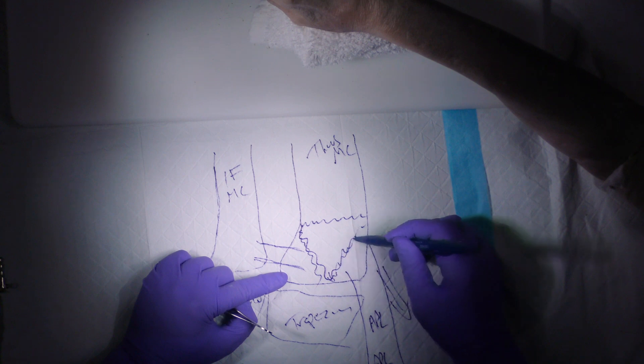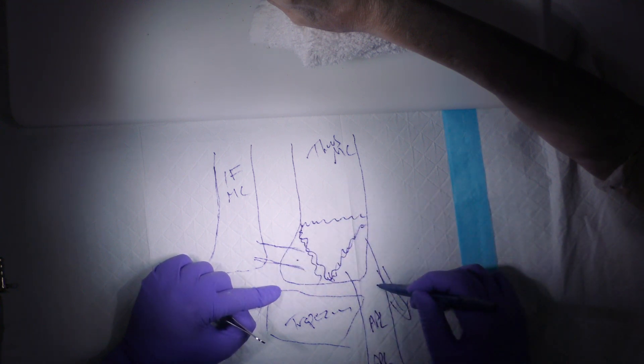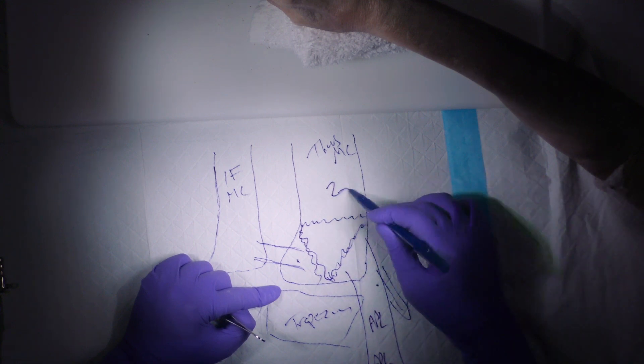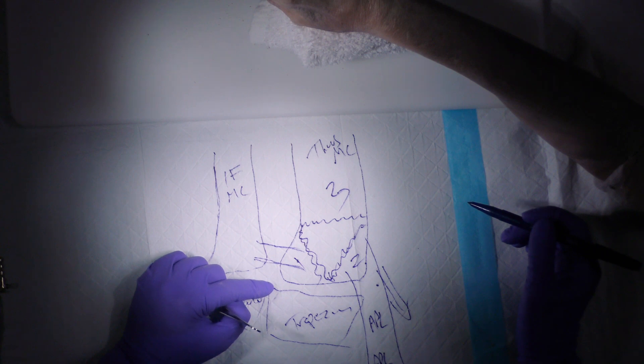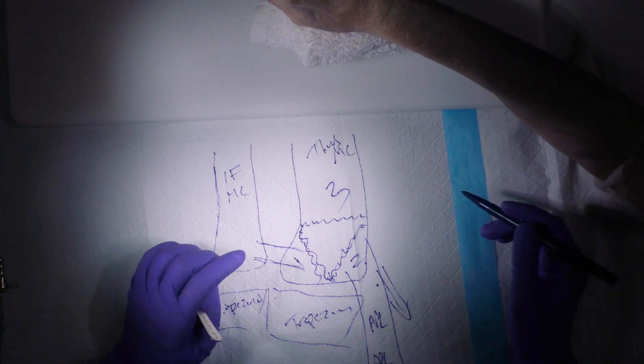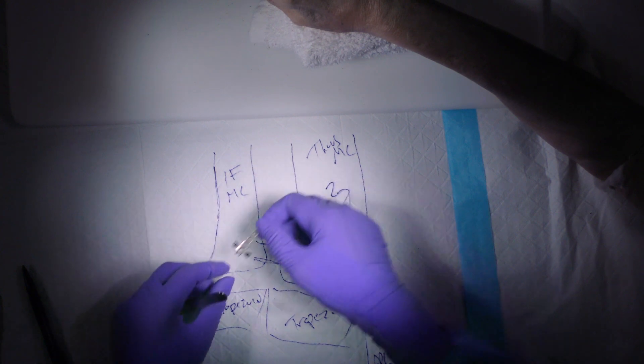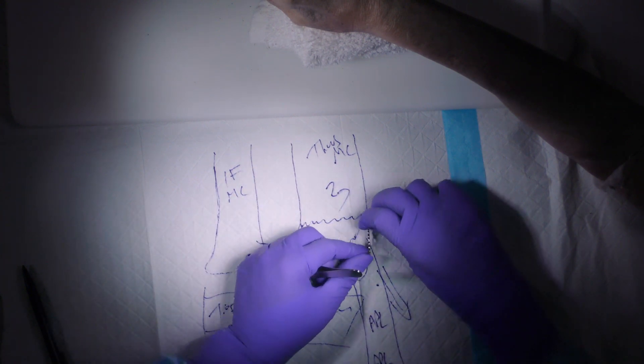With a Rolando fracture, you often have a Bennett component and another component, making two fragments—one here, one here—and then the shaft is three. So that's what we're referring to. What's nice about this implant is it allows you fixation in a lot of different ways.